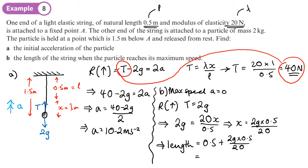So we'll work that out. So 0.5 plus 2g, 2 times 9.8, times by 0.5 over 20. And we get 99 over 100, which is 0.99.